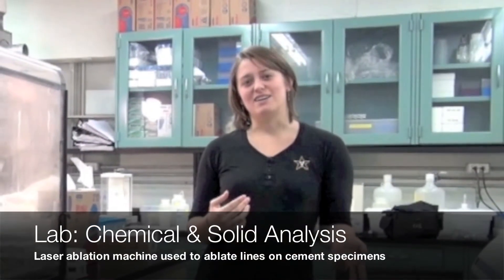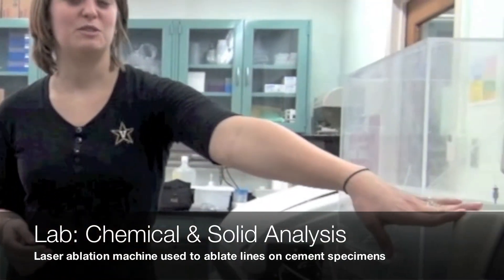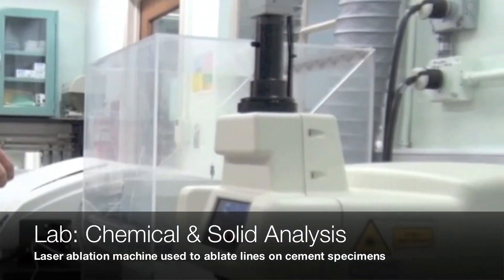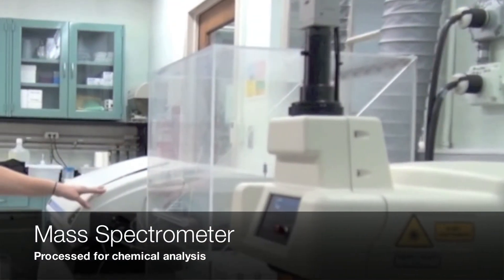I'm here in one of our lab spaces where we do chemical and solid analysis. We have our laser ablation machine here, which we can use to ablate lines across our cement specimens, and they are then sent to a mass spectrometer and processed for chemical analysis.